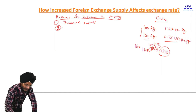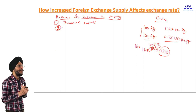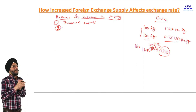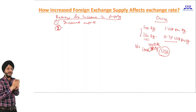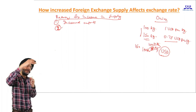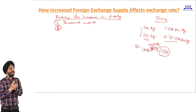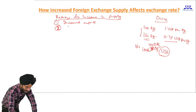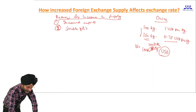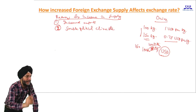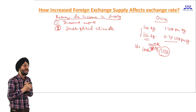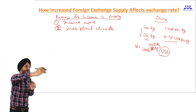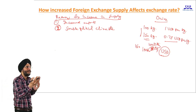Next, suppose in India there is improvement in political climate — as compared to earlier, if there is stability in political climate and the government is stable. When there is a stable political climate in any country, then foreign investors come to make investment in that country, so there is an inflow of foreign exchange which results in an increase in foreign exchange supply.